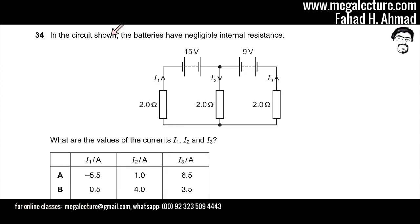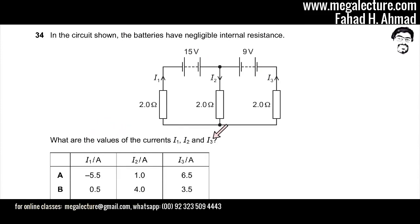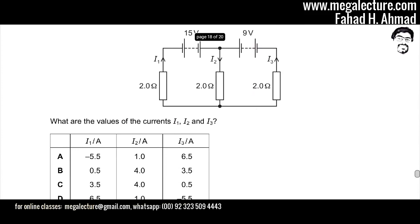The following question reads that in the circuit shown, the batteries have negligible internal resistance. There's a 15 volt battery and a 9 volt battery, and you're being asked what are the values of the currents i1, i2, and i3. So you need to solve this circuit and figure out the value of i1, i2, and i3.